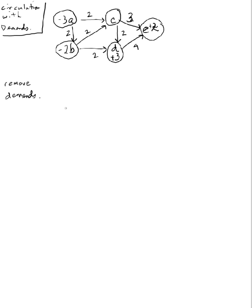And to remove the demands we create a super source and a super sink. From the super source I draw a link to all the nodes in the original network that are source nodes. And the capacity I put on that link is the same as the supply. So this is two. Then similarly for the super sink I draw a link from the sink nodes which are D and E to my super sink. And I label them with the demands, the sink demands on those nodes.